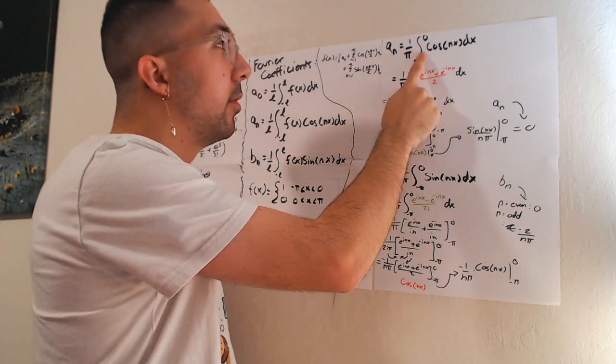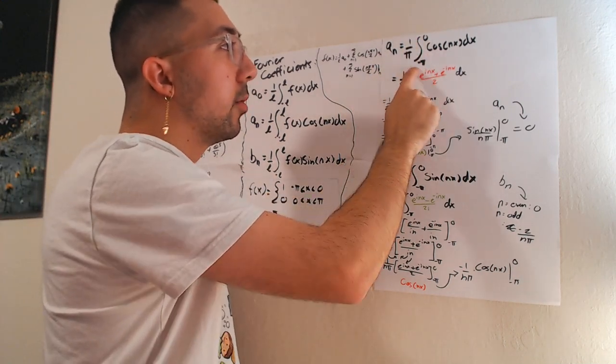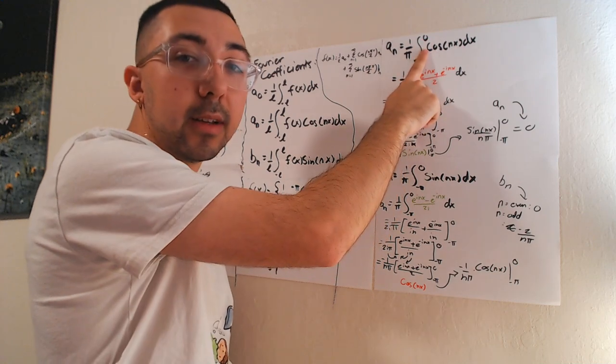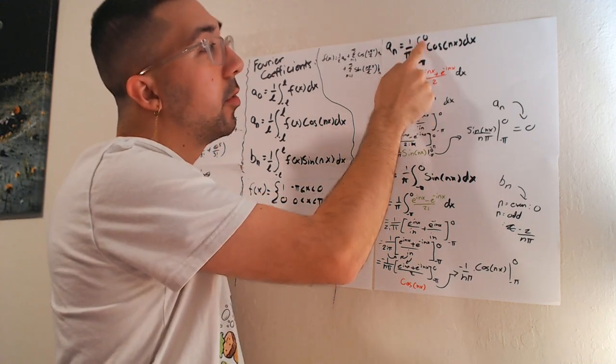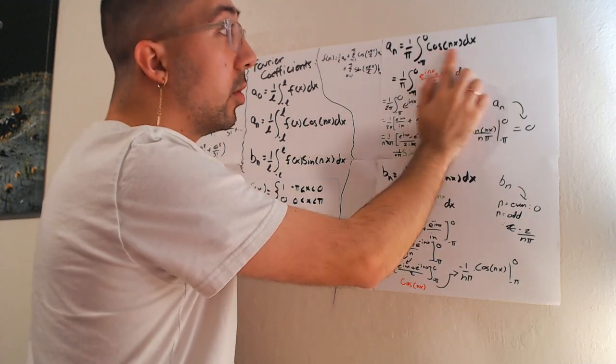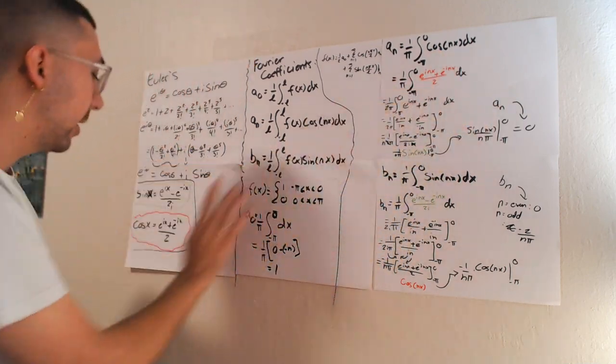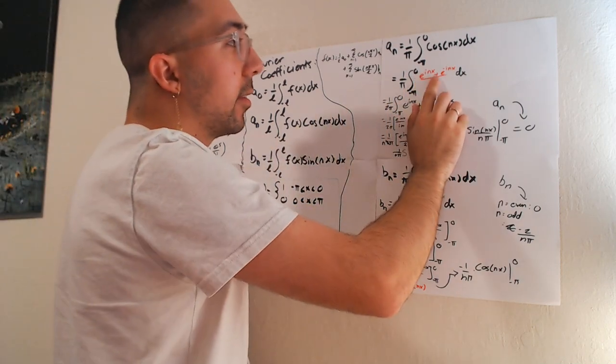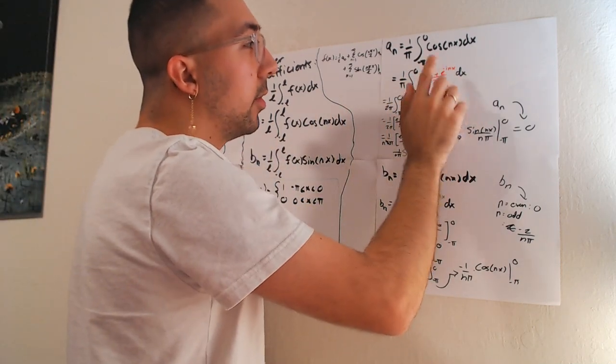A sub n, we're going to have 1 over pi, integral negative pi to 0 again, only because that's where the function is. So the function would be 1 times cosine nx dx, and we're actually going to write out cosine nx in its complex form. So it's going to be e to the inx plus e to the minus inx all over 2 dx.